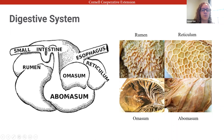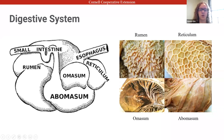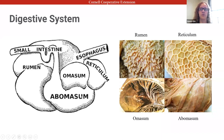Most nutrient absorption happens in the small intestine. Uniquely, the rumen microbes also produce volatile fatty acids, which are absorbed directly through the rumen wall, and microbial proteins — this is part of the reason ruminants can get more protein than monogastrics from grass, because those microbes produce protein and are then digested themselves.